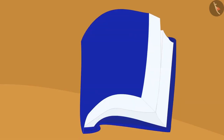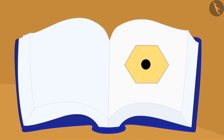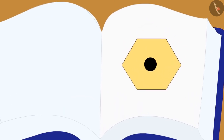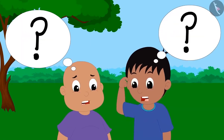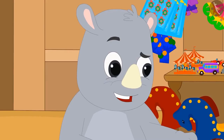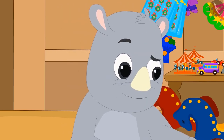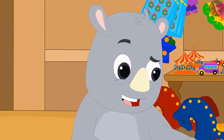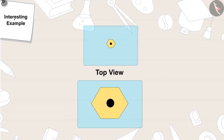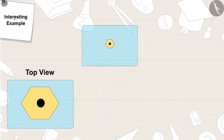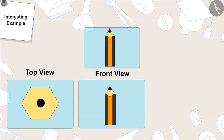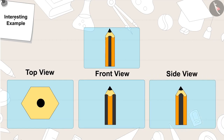Gaggoo opened the book and showed them a picture and asked them to identify the object. Raju and Bablu started thinking, then said: ha ha, it is very easy. It is a pencil! From the top view, a pencil looks like this. From the front view, it looks like this. And from the side view, it looks like this.